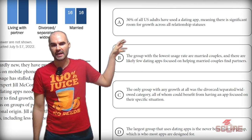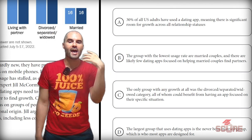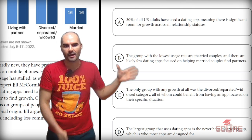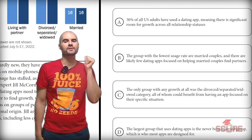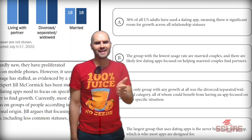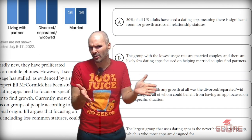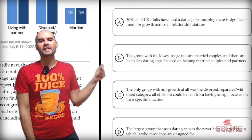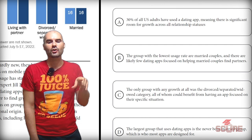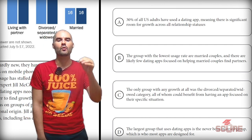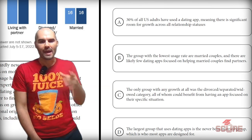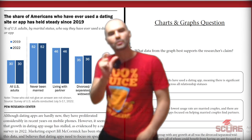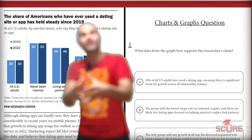Answer A says 30% have used a dating app and there's significant room for growth across all statuses — the 'all statuses' answer is always going to be wrong if we're being asked to focus on something specific. B says the group with the lowest usage rate are married couples, and there are likely few dating apps focused on married couples — that doesn't make sense; married couples are a large, not uncommon group, and obviously don't need dating apps. C says the only group with any growth at all was the divorced, separated, widowed category, all of whom could benefit from having an app focused on their specific situation. That's your answer — we do see a one percentage point growth in that category, so it makes sense that the expert would tell us to focus there.